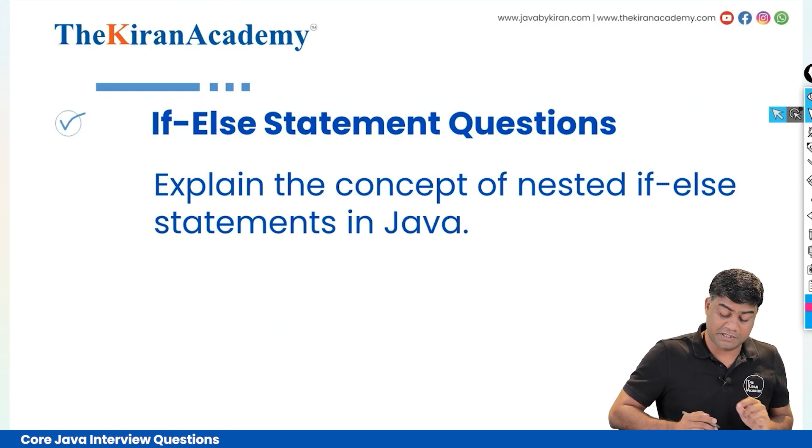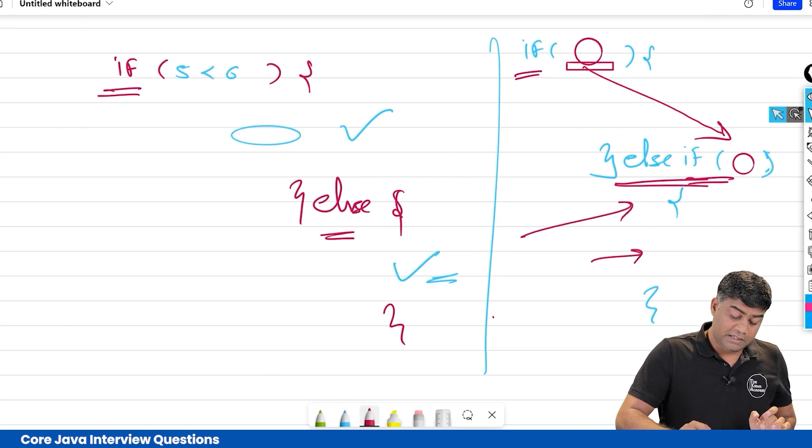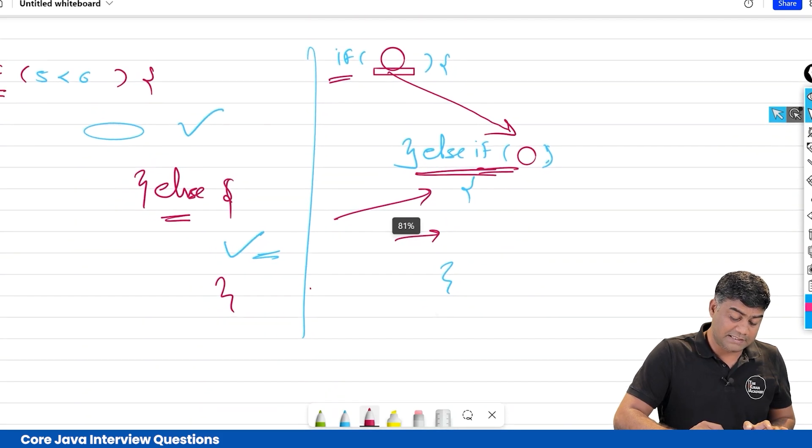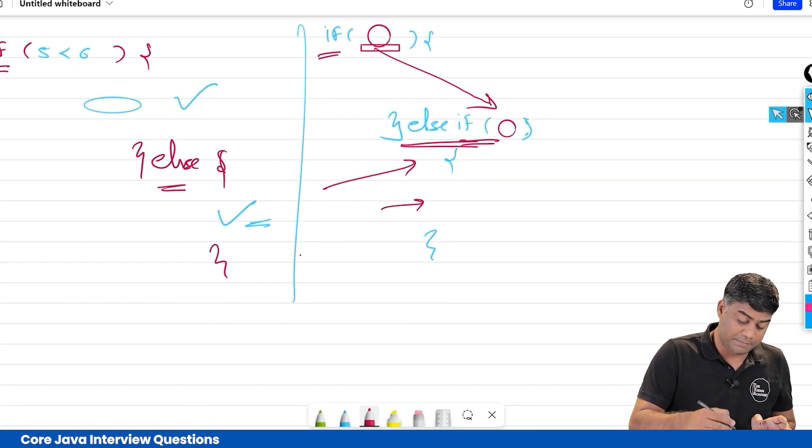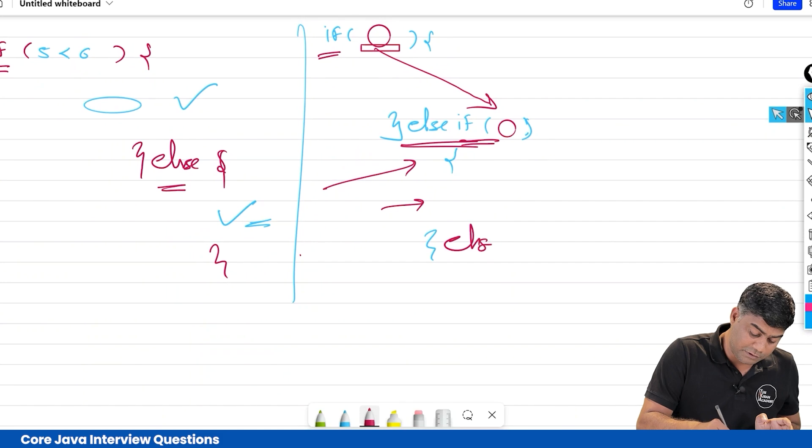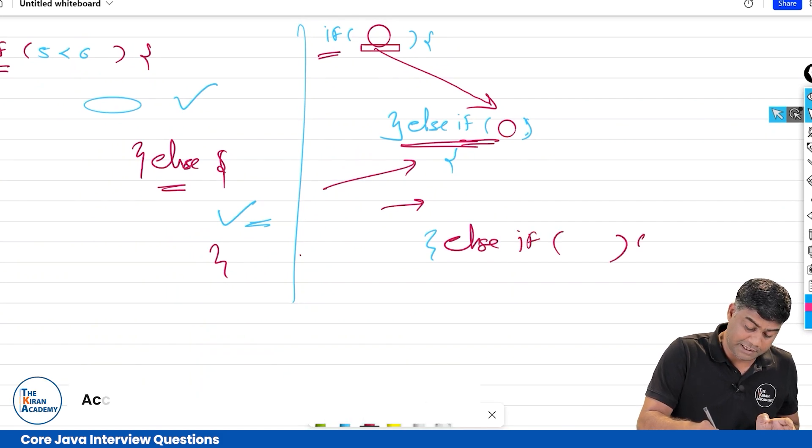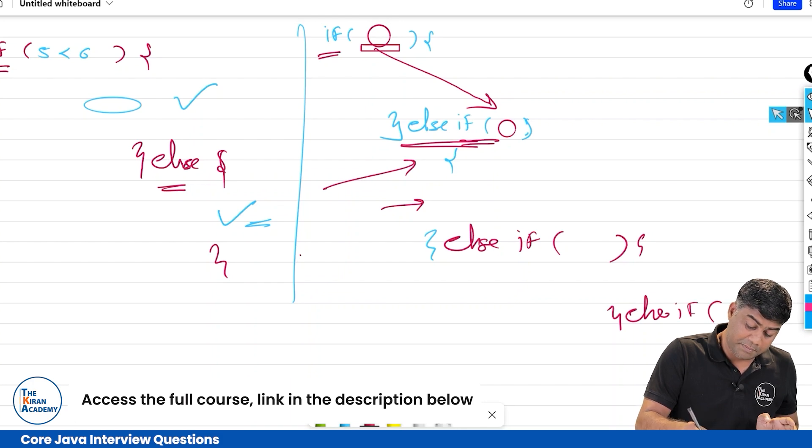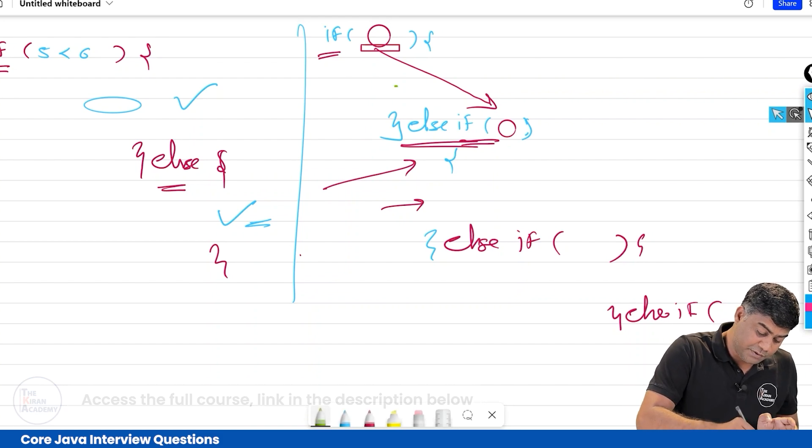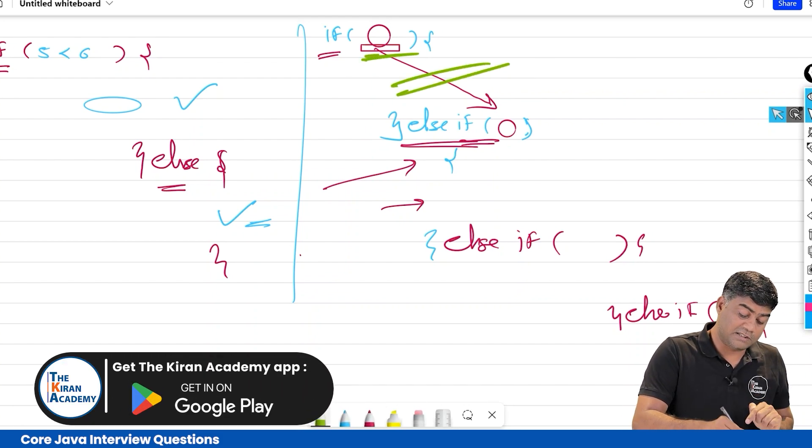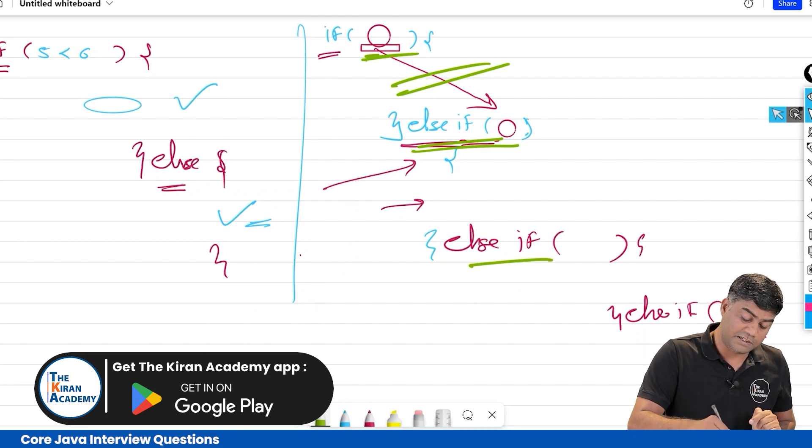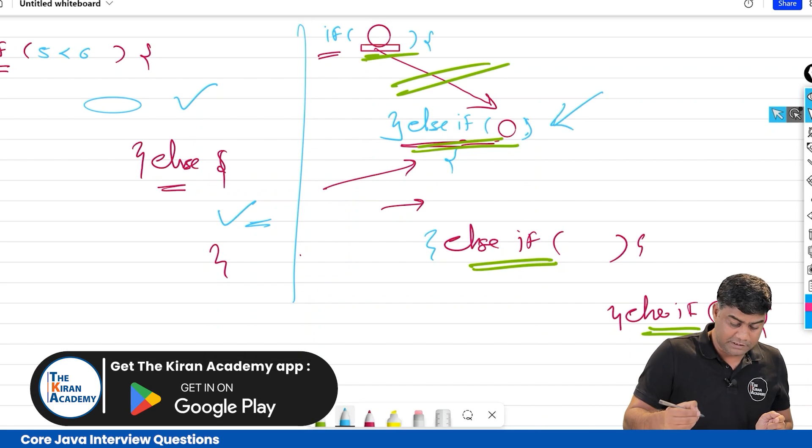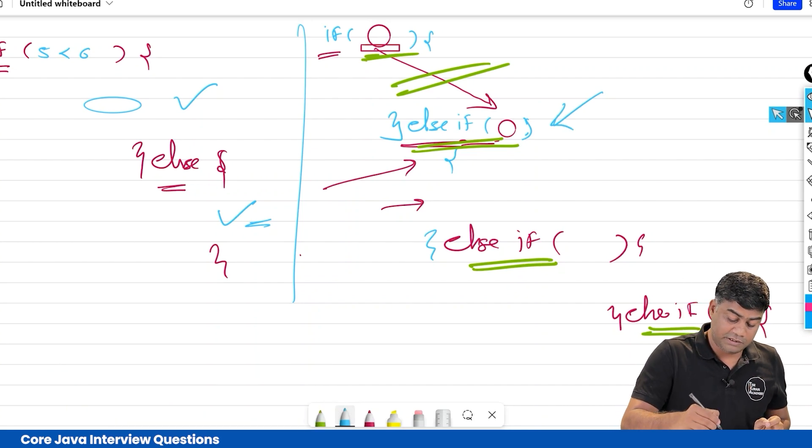What does nested if-else mean? You can keep writing else if, else if, else if unless your requirement is complete. You keep on writing like this. But remember what I told in the first question - it will always first execute this condition. If false, then only come here. If false, then only come here. If it gets this condition true, then these remaining conditions will not get executed.